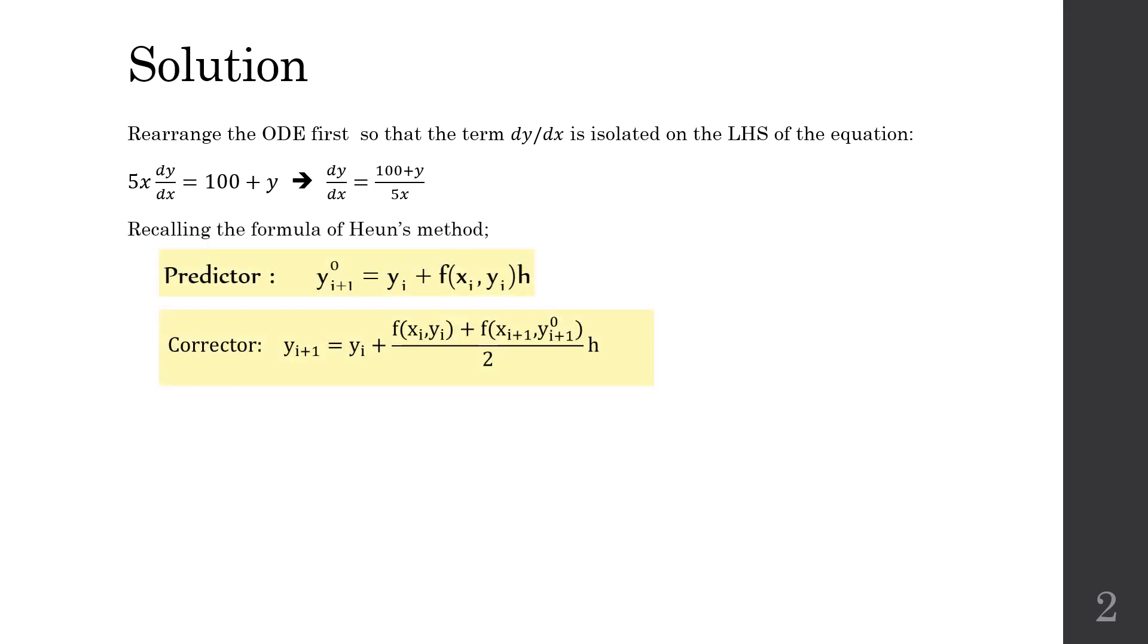Let's recall the formula of Heun's method. Two steps: predictor and then corrector.